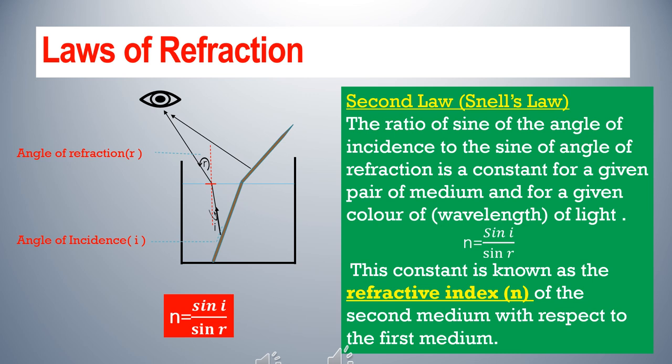The second law of refraction is also called Snell's law. It says that the ratio of the sine of the angle of incidence to the sine of the angle of refraction is a constant. We know angle of incidence is represented by small letter i and angle of refraction by small letter r. So according to Snell's law, n = sin i / sin r, where n is a constant. This constant is known as the refractive index. For all rays of light, the refractive index is the same even if we change the angle of incidence or angle of refraction.